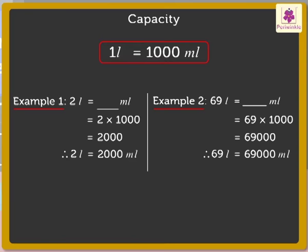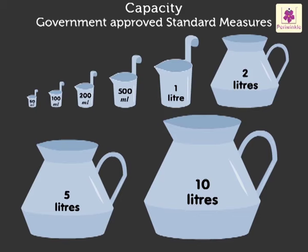There are certain standard measures used to measure the capacity of a liquid. They are approved by the government: fifty milliliters, one hundred milliliters, two hundred milliliters, five hundred milliliters, one liter, two liters, five liters, and ten liters.